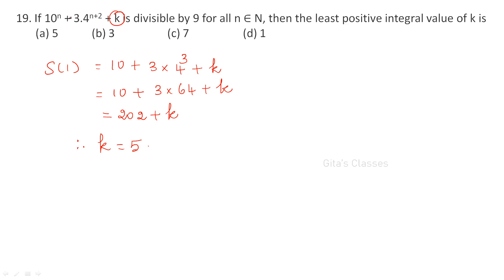Find S(1): substitute n = 1, giving 10 + 3 × 4³ + k = 10 + 192 + k = 202 + k. For divisibility by 9, the digit sum must be divisible by 9. The digit sum of 202 is 4, so adding 5 makes it 9. Therefore the least positive integral value of k is 5.